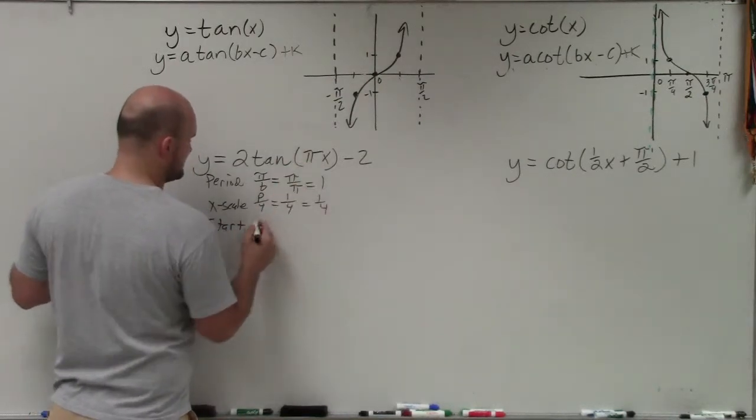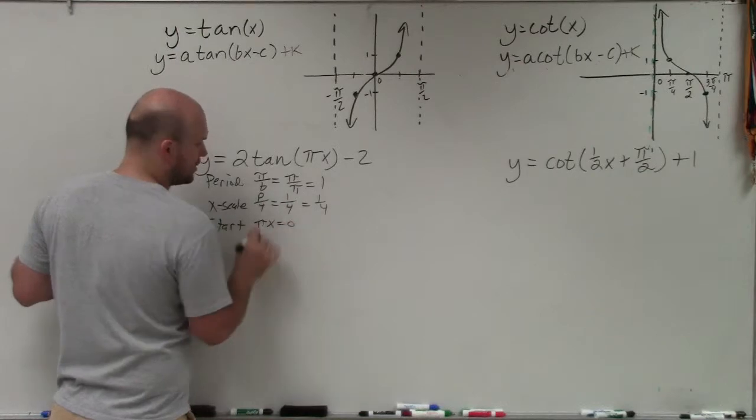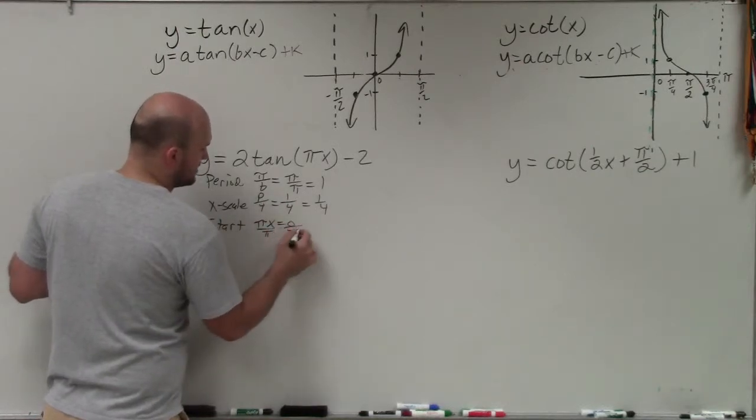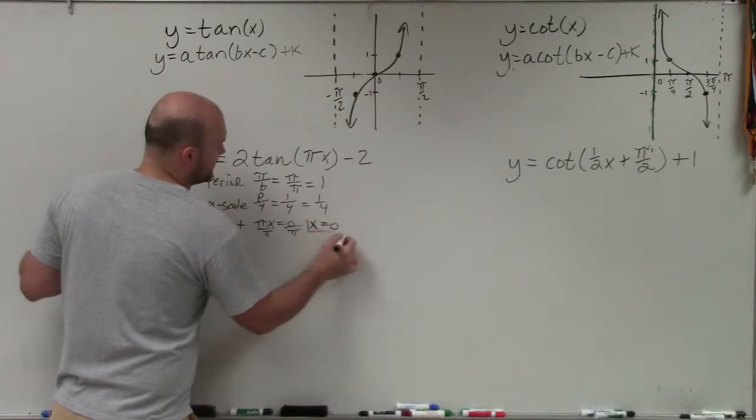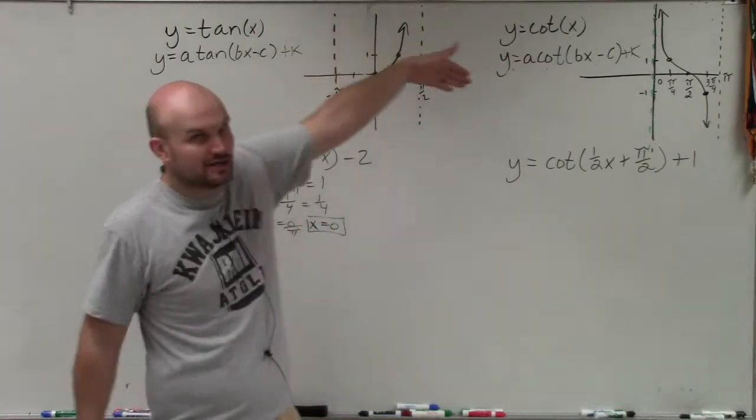But I'll still just show you what I mean by that. So I take whatever's inside of my function, and I do πx equal to 0. Then I solve for x. So I divide by π on both sides, and I get x equals 0. That's where we're going to start, which is the same as our initial period.